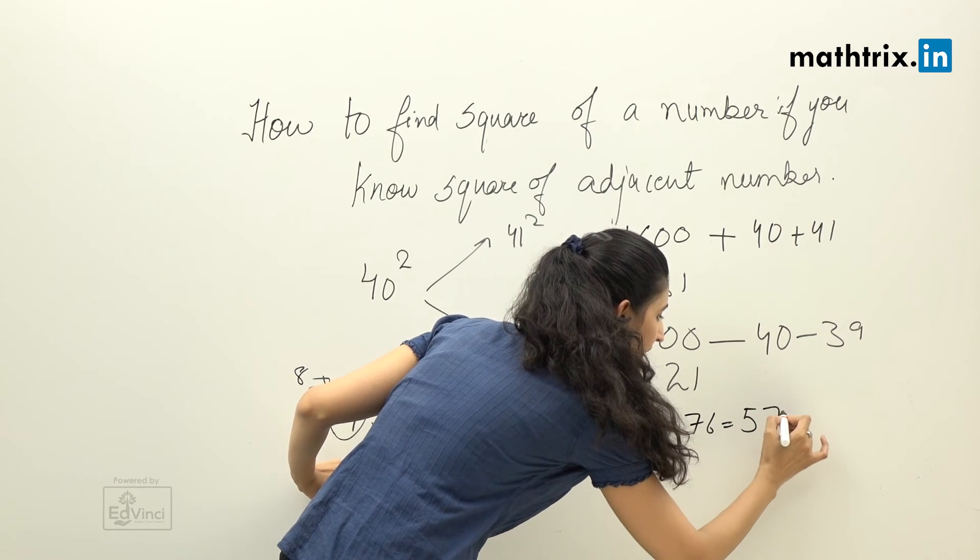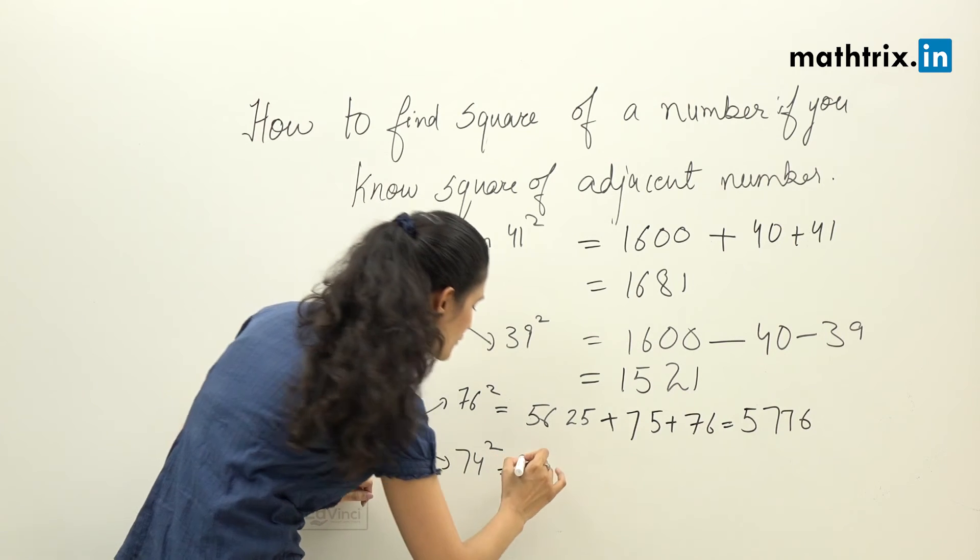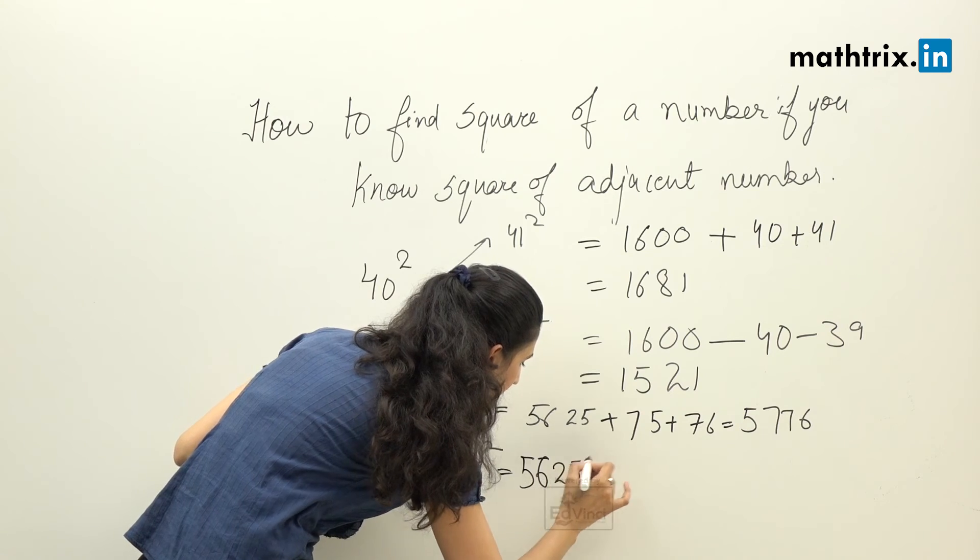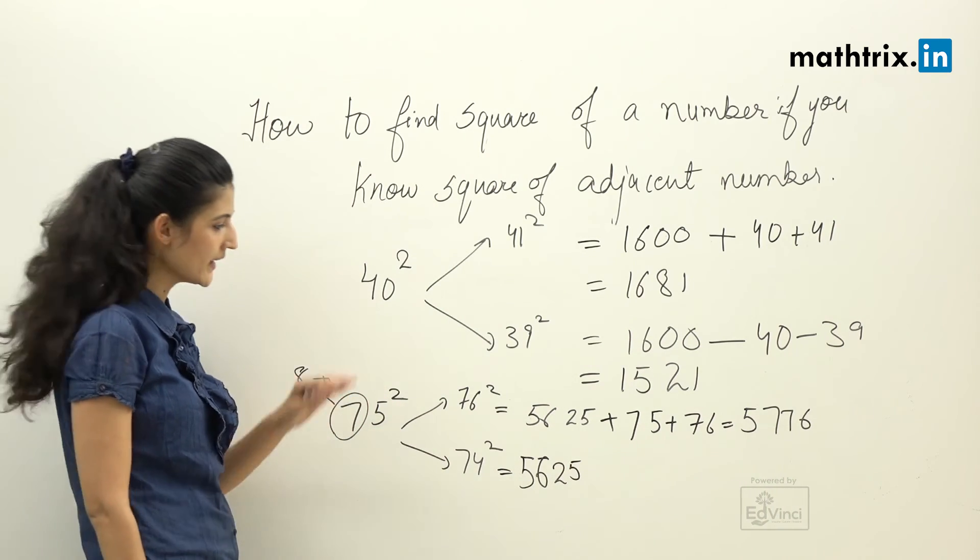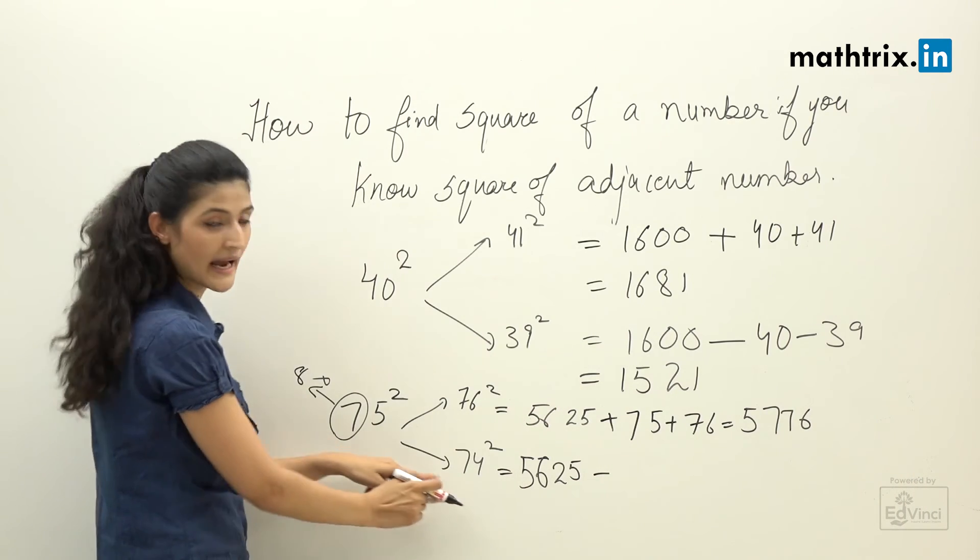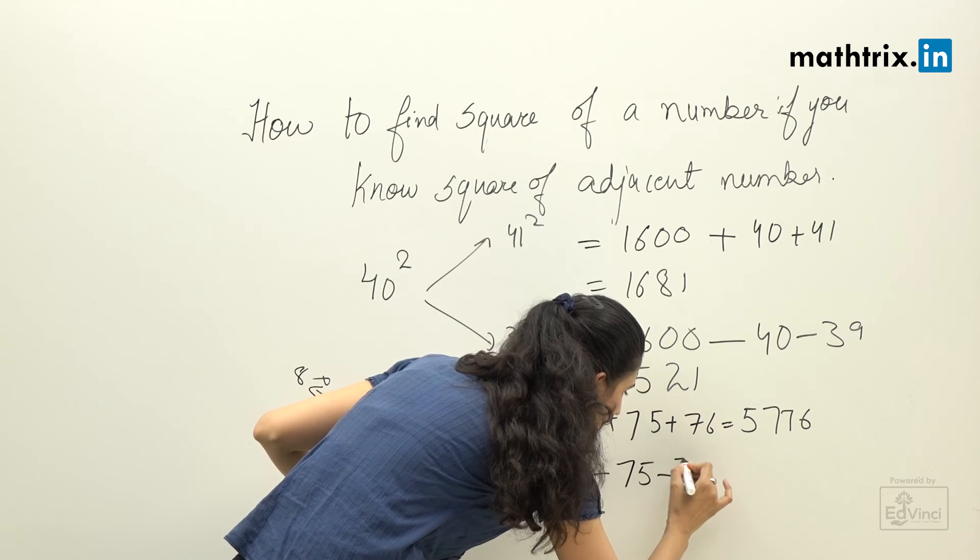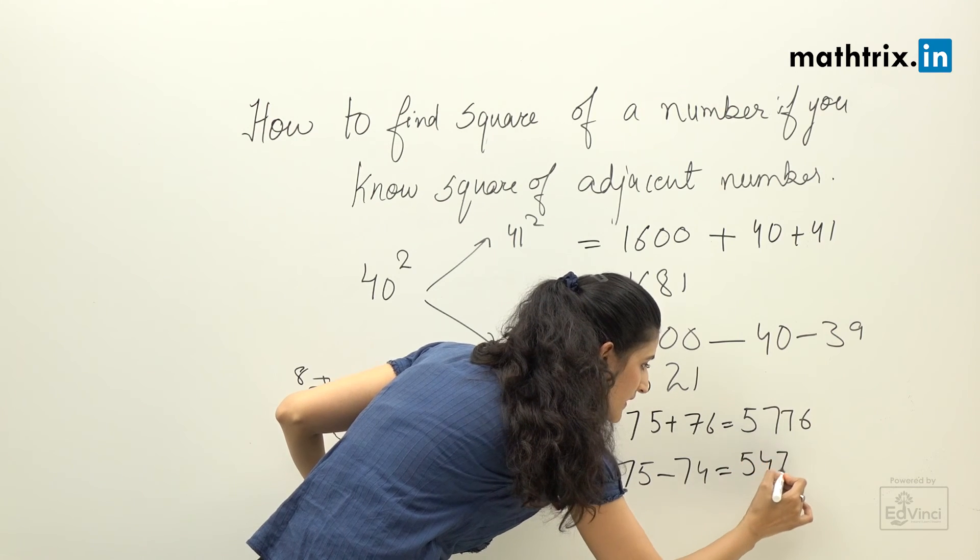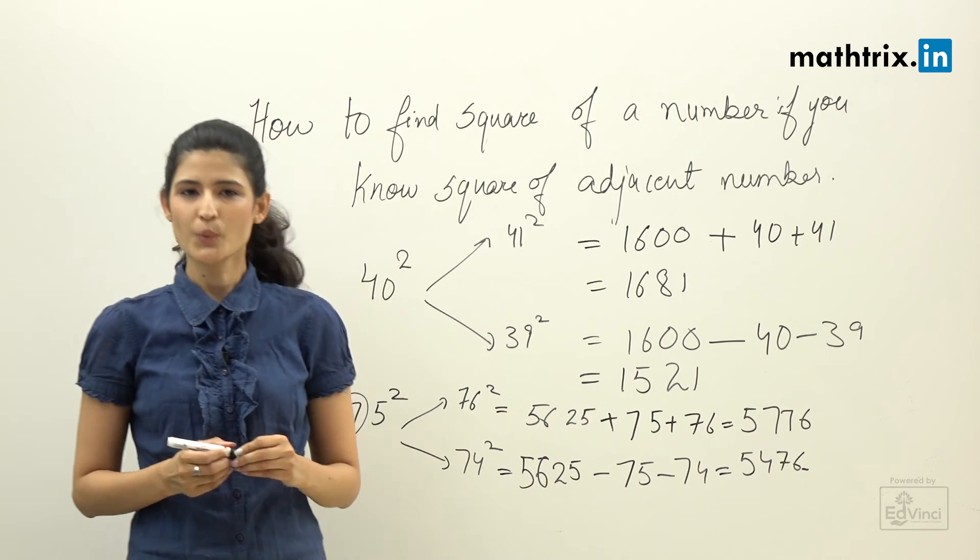Now 74 square. We know the answer for 75 square is 5625. As this number is less than 75 square, so we'll subtract the adjacent number and the number itself, which is 75 minus 74. And the answer is 5476. So this is a quick trick for you guys.